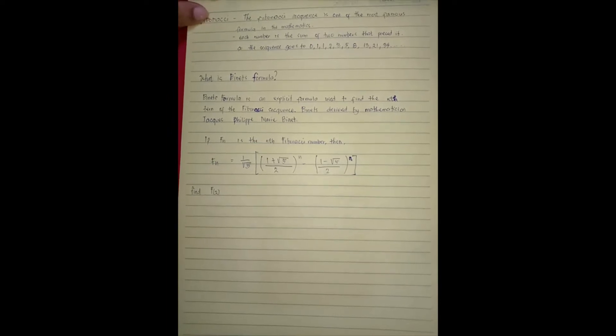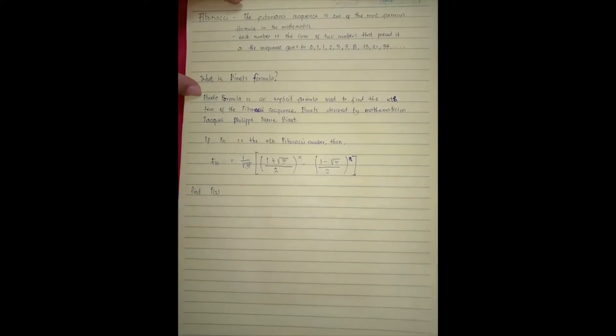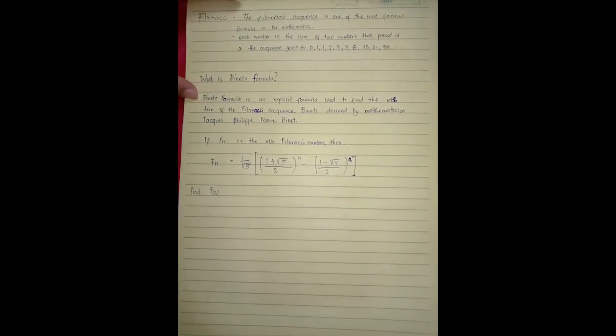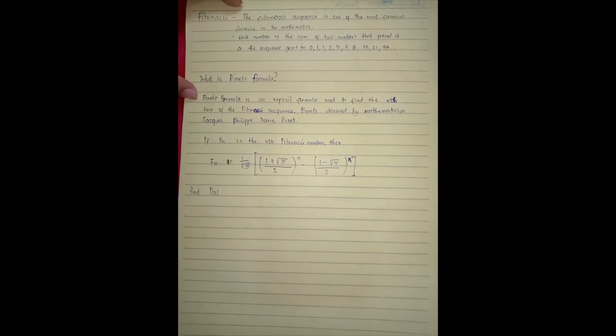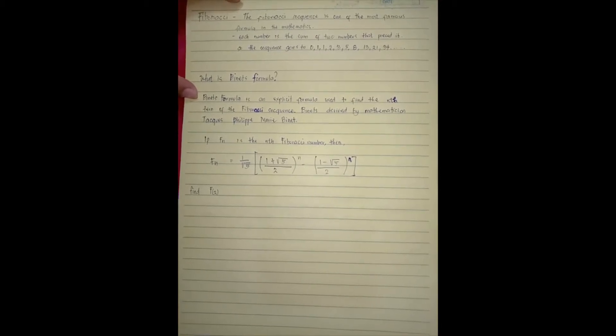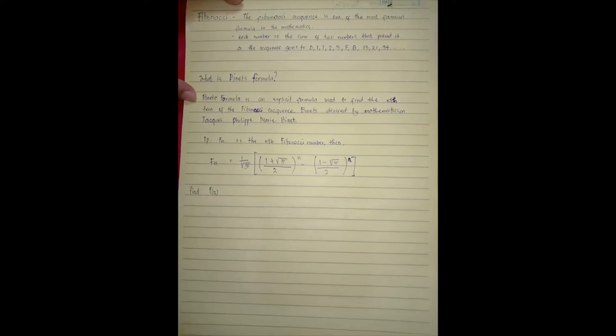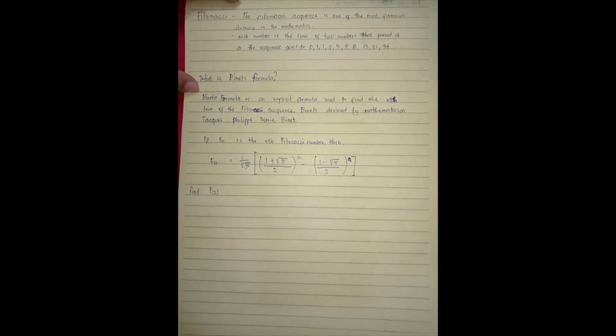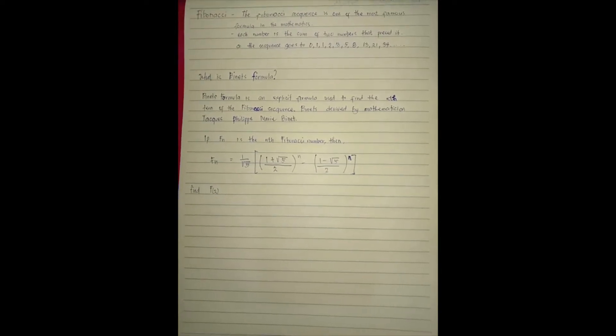Let's move on to Binet's formula. So Binet's formula is an explicit formula used to find the nth term of Fibonacci sequence. Binet's derived by the mathematician Jacques Philippe Marie Binet, so dun yun na dun galing yung ano, Binet's formula, kung sino yung nakadiscover nun.